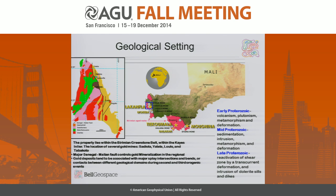The geological setting for this project in West Africa: in the western part of the nation of Mali, there's a whole line of gold mines along the Birimian greenstone belt. The gold mining activity is centered along the edge of this greenstone where it meets the host rock, characterized by the Senegal Mali Fault. There are various inliers that represent different stages of intrusive activity.